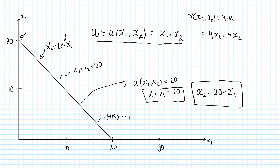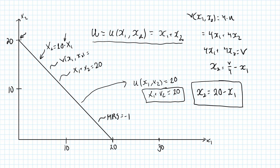An indifference curve for utility function v would be 4x1 plus 4x2 equals some utility level v. Moving 4x1 to the other side and dividing by 4, we get x2 equals v over 4 minus x1. So this indifference curve is a level curve of v, where v(x1, x2) equals 4 times 20, or 80. The same preferences are represented by two different utility functions.